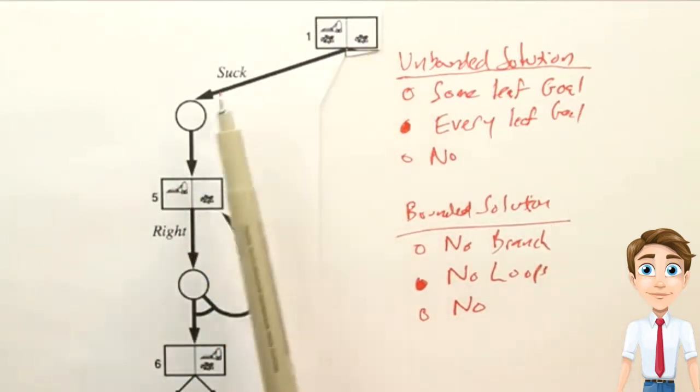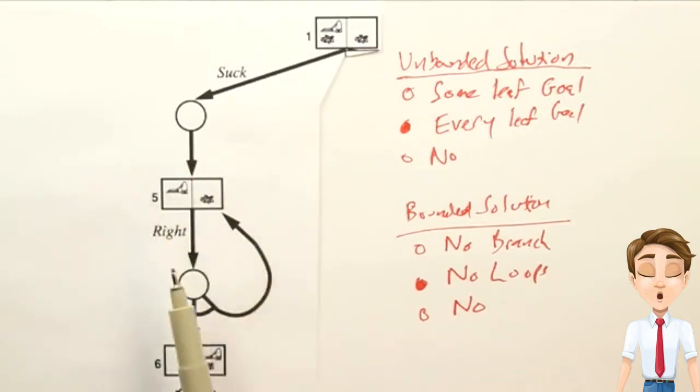But if we had a loop, it might be one, two, three, four, five, we don't know how many steps it's going to take.